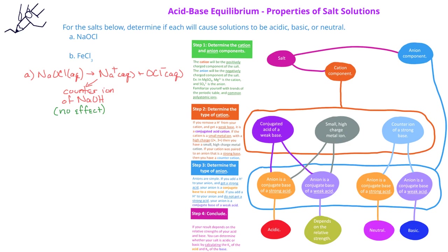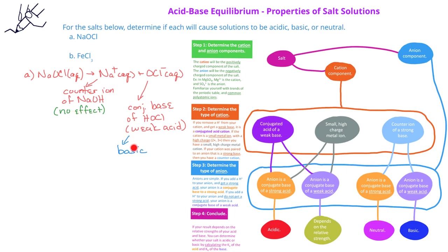Now let's look at the anion, the hypochlorite ion, OCl⁻. If we added an H to the hypochlorite, we would have HOCl — hypochlorous acid — which is not a strong acid. That means the hypochlorite ion is a conjugate base of a weak acid, and therefore the hypochlorite ion will make a solution more basic. When we combine these two ions, we see that the sodium has no effect, but the hypochlorite ion makes a solution more basic. So overall, a solution of sodium hypochlorite will be basic.